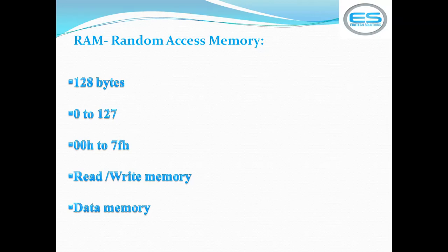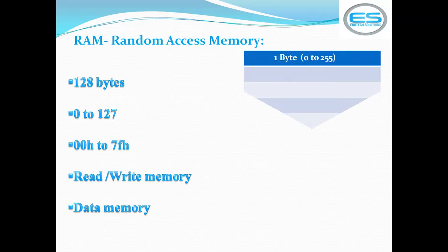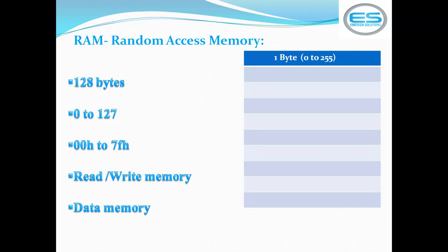In embedded C programming, you can use the standard keyword 'data' before the data type to access this memory. Each location allows one byte of data — decimal representation is 0 to 255, and hexadecimal representation is 00h to FFh. The initial address of RAM memory starts from 00h and the ending address is 7Fh.